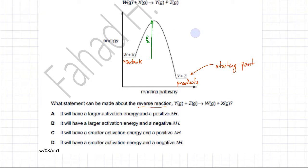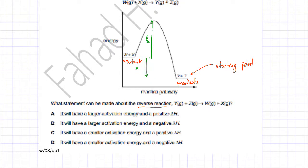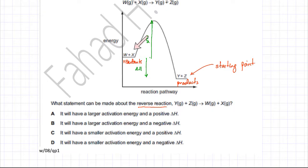The overall enthalpy change for the forward reaction is the difference between the energy of the reactants and the energy of the products — starting from the reactants and reaching the products. These arrows marked in green represent the forward reaction: the forward activation energy and the overall delta H.